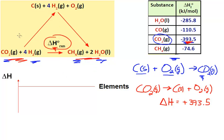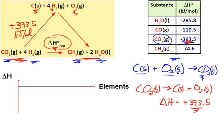In this situation I've drawn a triangle. What I'm going to do is decompose my reactants to the elemental state. For CO2 I'll decompose it to carbon solid and oxygen gas. Hydrogen is already in its elemental state, so I leave it as is — no energy is required. The decomposition of carbon dioxide requires 393.5 kJ per mole, and I'm decomposing one mole of CO2.